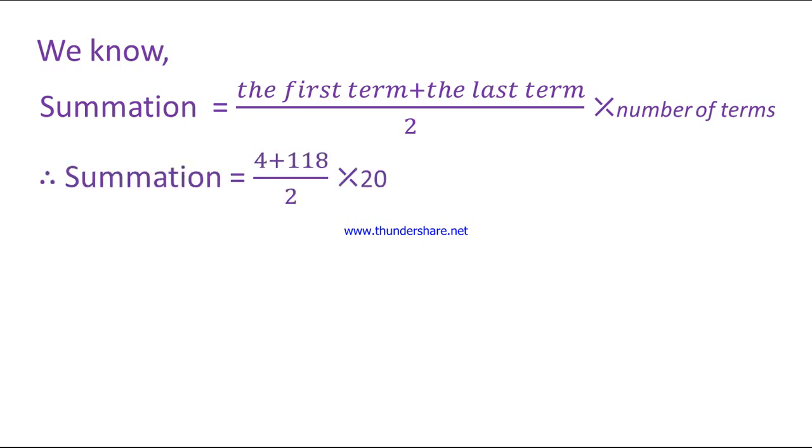So, summation equal 4 plus 118 by 2 into 20, equal 122 by 2 into 20, equal 61 into 20, equal 1220.